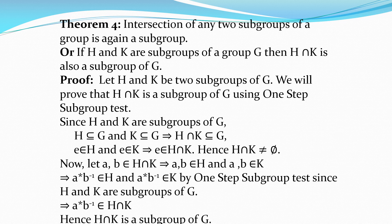Next important theorem: the intersection of any two subgroups of a group is again a subgroup. In other words, if H and K are subgroups of a group G, then H∩K is also a subgroup of G. Here G is any group under some binary operation star, H and K are subgroups of G, and their intersection — the set of all common elements — is always a subgroup of G.